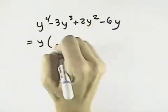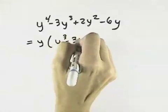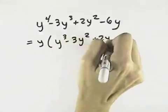So dividing a y to the first power out of each term, we're left with y cubed minus 3y squared plus 2y minus 6.